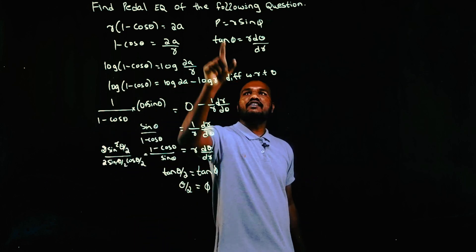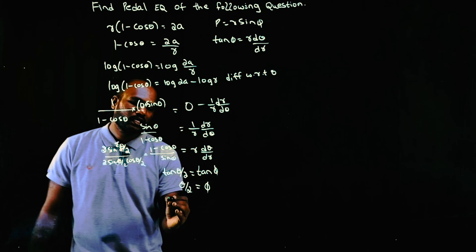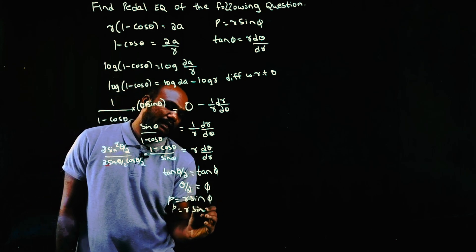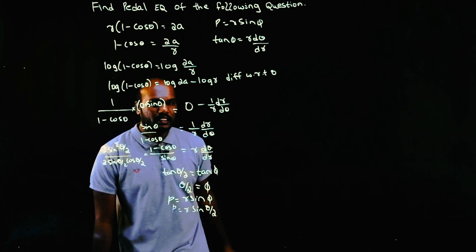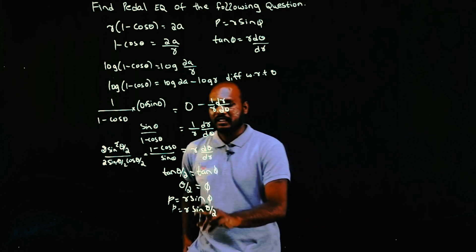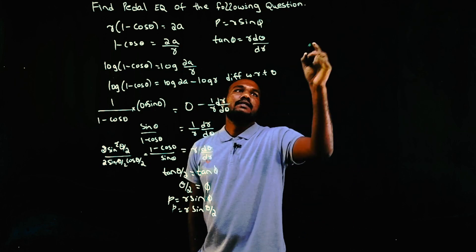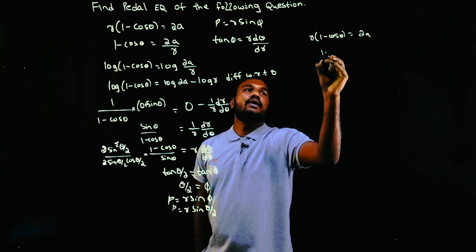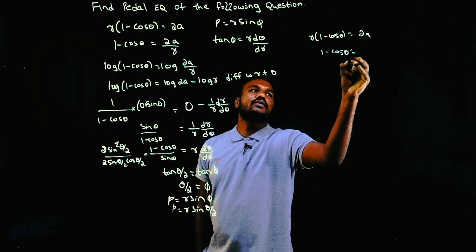p = r sin φ = r sin(θ/2). I told you the pedal equation is where θ will not exist, so we should replace sin(θ/2) with something else. From the given equation, r(1 - cos θ) = 2a, so 1 - cos θ = 2a/r. We know 1 - cos θ = 2 sin²(θ/2) = 2a/r.